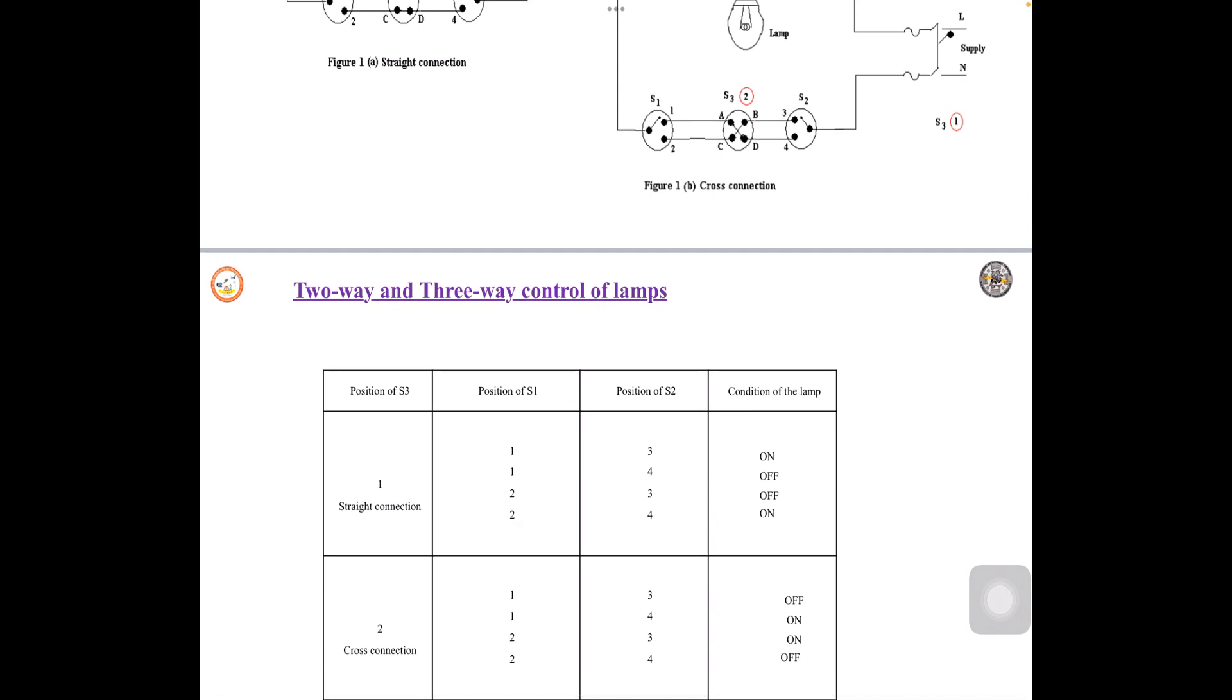Similarly when you observe second cross connection, here you can observe, S1 is at 1, S2 is at 3. Here zigzag connection we have made or cross connection. So S1 to 1 there is a connection. 1 to A there is a connection. A to D there is a connection. But D to 3 there is no connection. So it will be off.